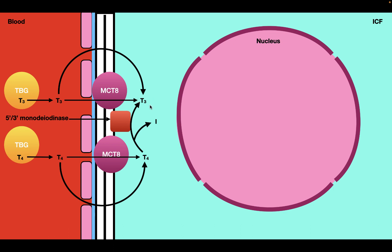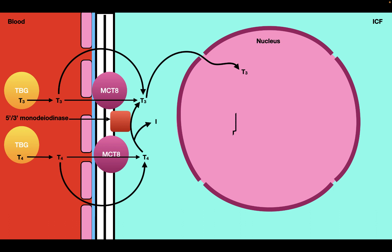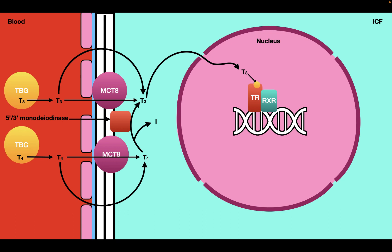So now that we have T3 in the cell, where does the T3 go next? T3 is actually going to move through the nuclear pores into the nucleus. Once T3 is in the nucleus, it can exert its effects. T3 is going to bind to the thyroid hormone receptor, which is bound to another protein called RXR and also bound to DNA. When T3 binds to the thyroid hormone receptor, the receptor is going to modulate the transcription of specific genes. So the main effect of thyroid hormone is going to be genomic.